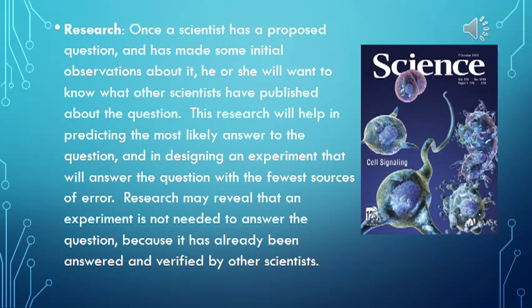Once a scientist has a proposed question and has made several initial observations about it, he or she will want to know what other scientists have published about the question. This research will help in predicting the most likely answer to the question and in designing an experiment that will answer the question with the fewest sources of error. Research may reveal that an experiment is not needed because the question has already been answered and verified by other scientists.